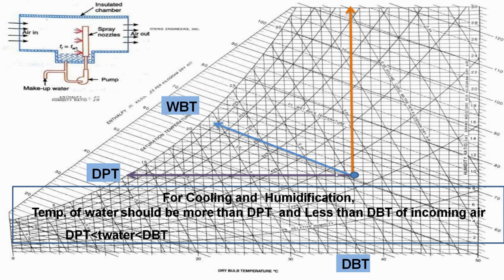Here we can see one machine where makeup water is added and one pump sprays the water from a sprayer nozzle, which cools down the air entering the tube. In this process, the moisture of the air gets increased and temperature is decreased.